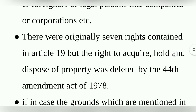The next point is that there were originally seven rights contained in Article 19. But the Right to Acquire, Hold, and Dispose of Property was deleted by the 44th Amendment Act of 1978. This is a commonly asked question: which amendment deleted the seventh right under the Right to Freedom?